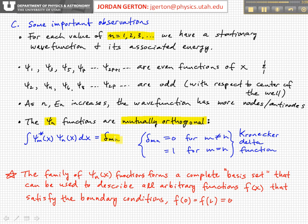So this symbol here is called the Kronecker delta function. It's equal to zero if the indices are not the same, and it's equal to one if the indices are the same.